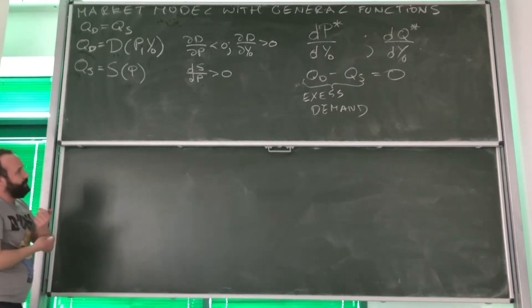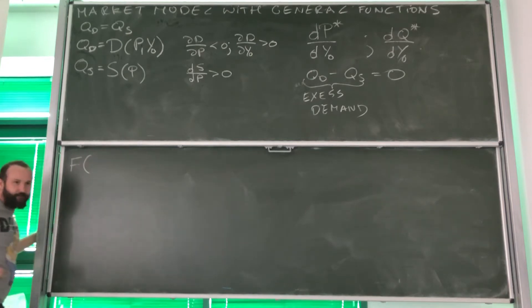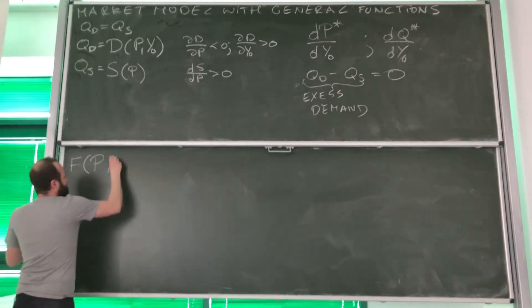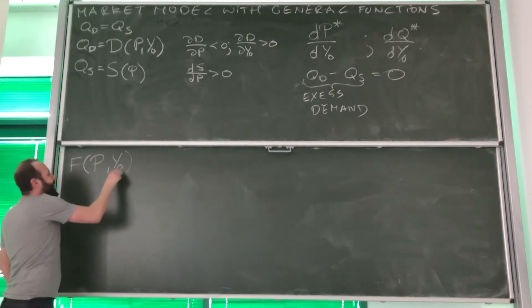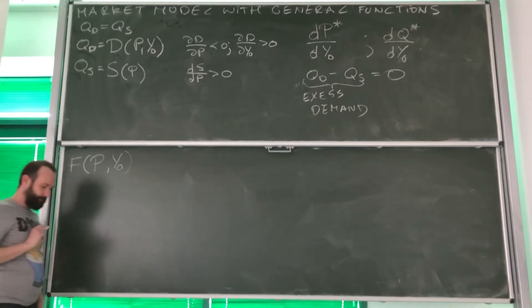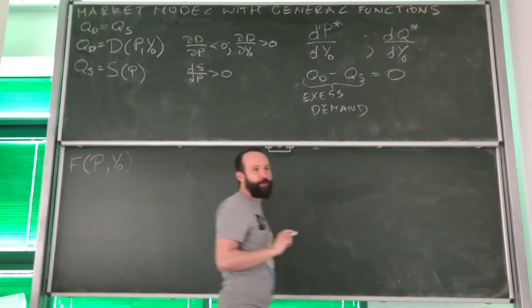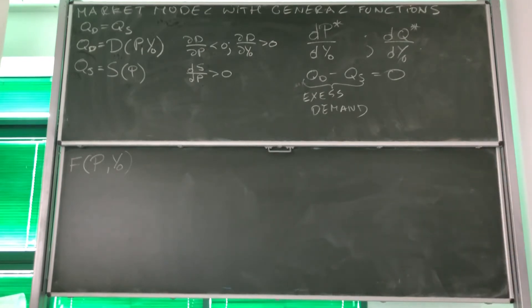So first, what is going to be our function F? We definitely know that this is going to be a function of price and income. Okay. So I'm going to add one more thing. From this moment on, we're going to be introducing some convention.